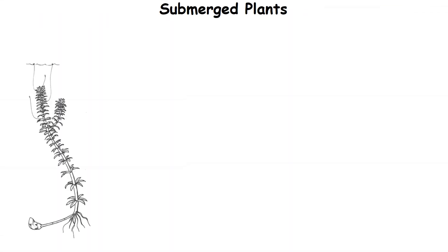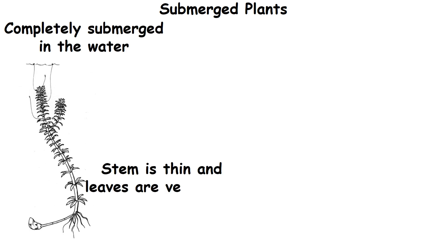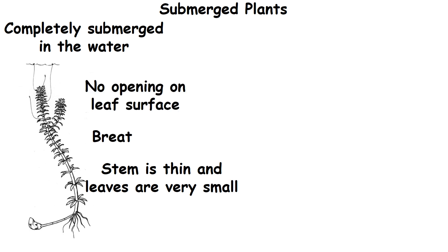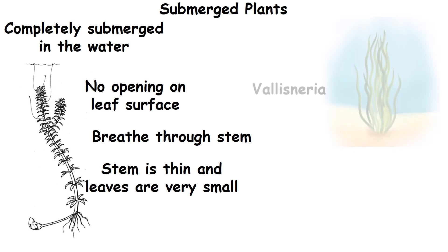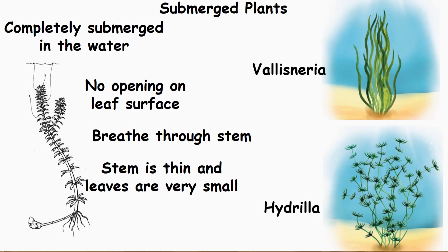Submerged plants. These plants are completely submerged in the water. Their stem is thin and leaves are very small. There is no opening on the leaf surface. They breathe through the stem. Example: valisneria and hydrilla.